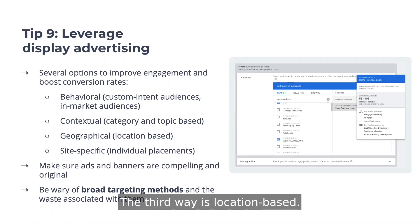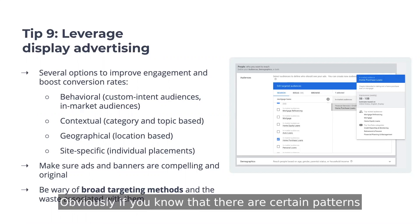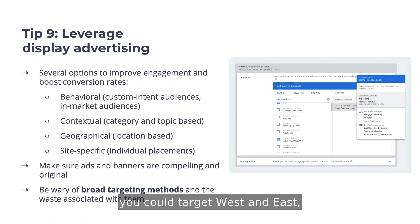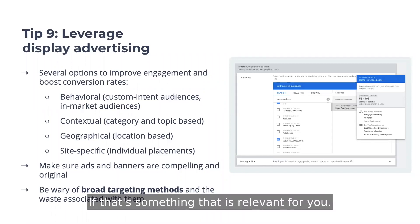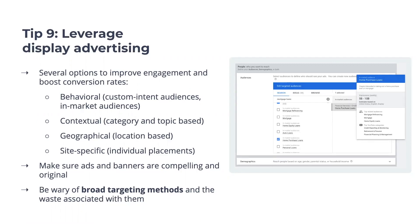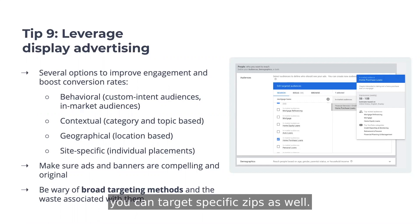The third way is location-based. Obviously, if you know that there are certain patterns among your audiences — let's say they're bi-coastal — you could target the West Coast and the East Coast and skip over the flyover states if that's relevant for you. Or if you tend to do better in higher-income areas, you can target specific zip codes as well.